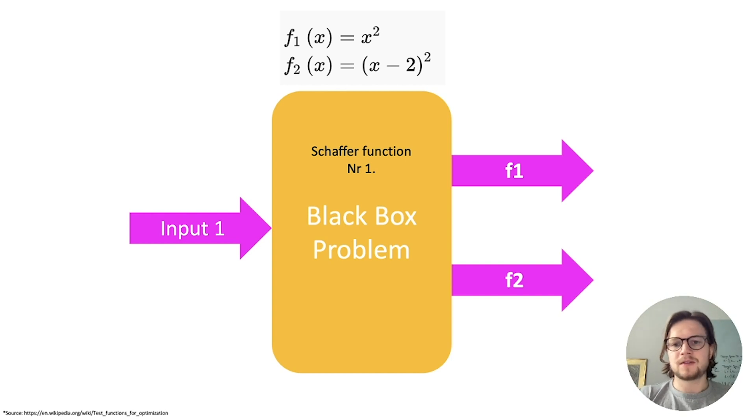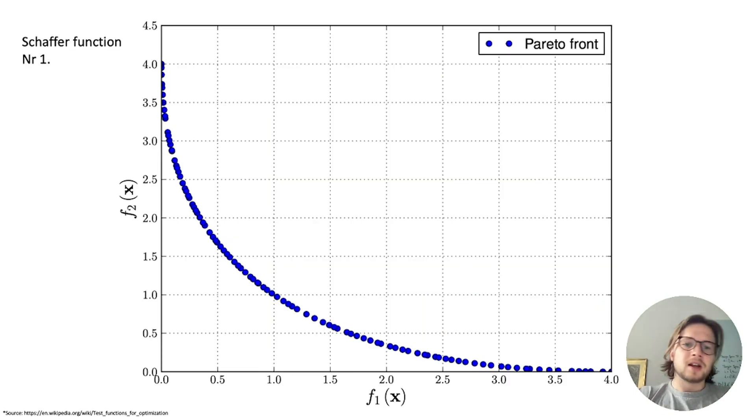And the beauty about this function, and that's also the base I want to teach you today about benchmark problems, is that we know the real Pareto frontier. So if we take a look here at the Pareto front you can see there are only Pareto points here depending if we have continuous or discrete input variables. It can be only points or in the end it will be a line.